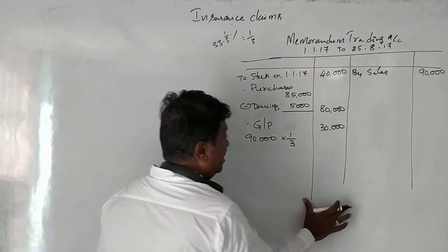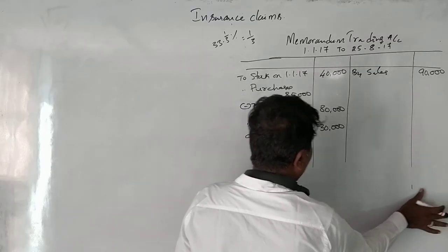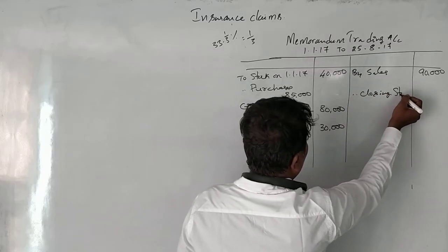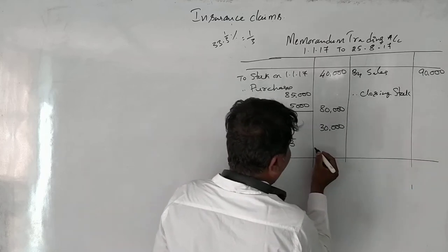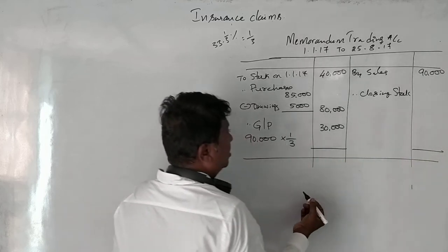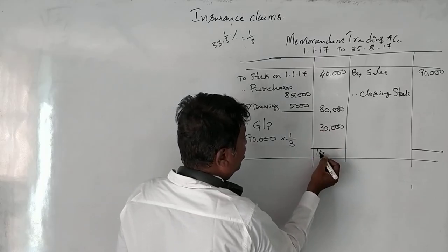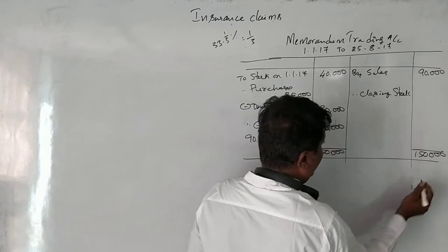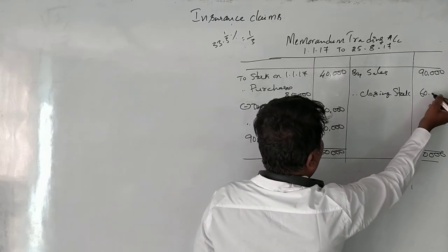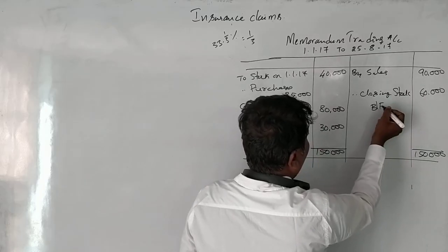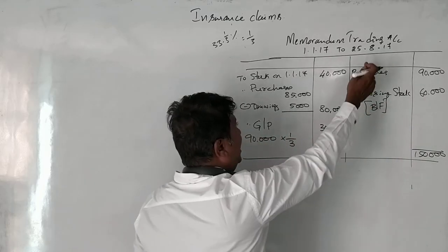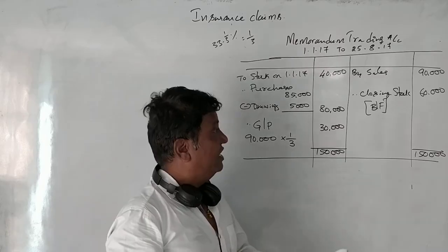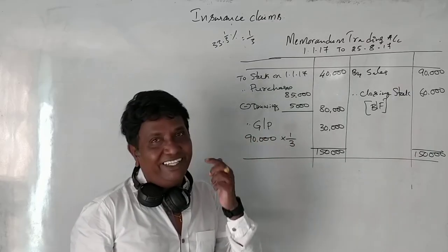Now we calculate the closing stock on the date of fire. Adding up the debit side: ₹40,000 + ₹85,000 + ₹30,000 = ₹150,000 (after adjusting goods taken). Deducting the credit side of ₹90,000, we get closing stock on 25th August 2017 of ₹60,000.